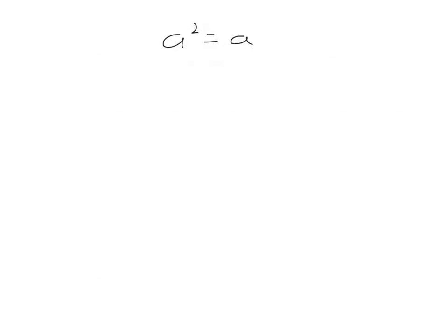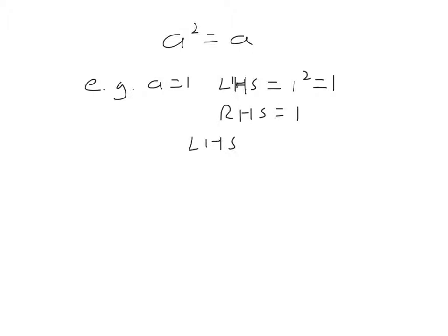Here's a proof that if you take any number and square it, it's the same as the number itself. For example, if a equals 1, the left hand side of that equation equals 1 squared, which is 1. The right hand side is just 1. So, the left hand side equals the right hand side. Therefore, that's true. So, a squared equals a.